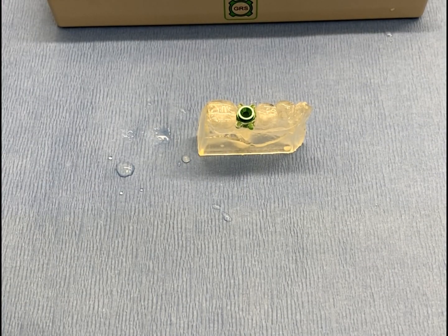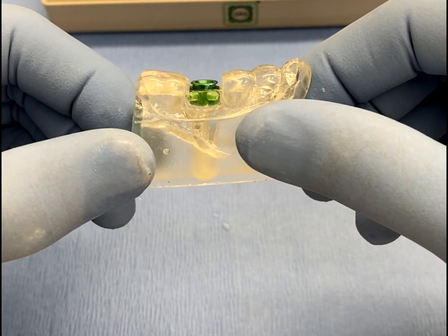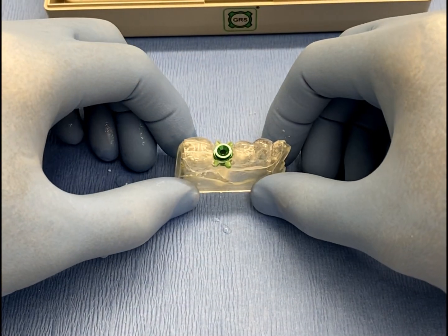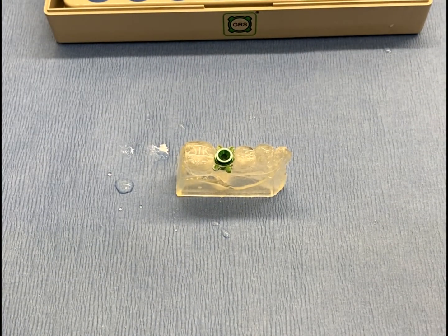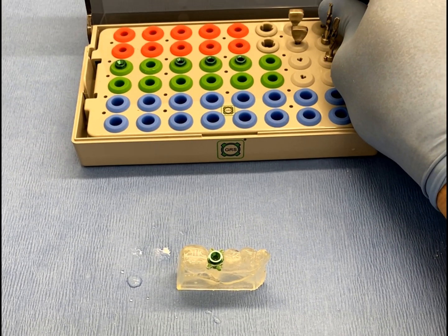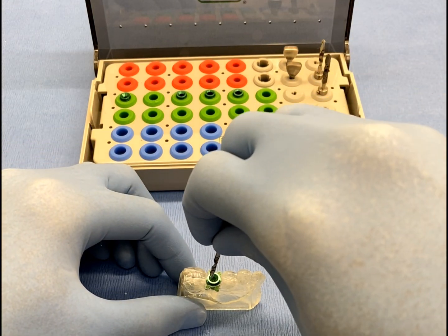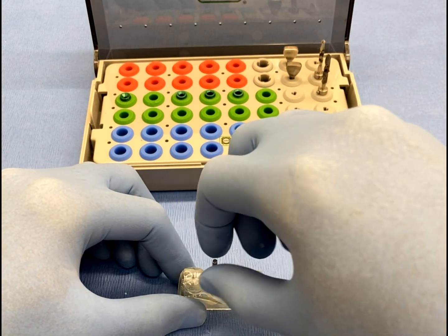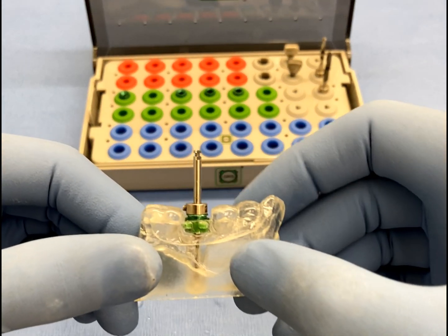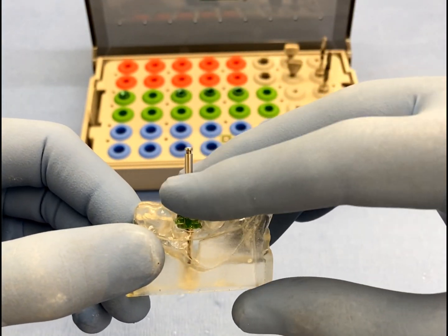Once retention and fit is confirmed, insert a GRS surgical sleeve with an internal diameter of 2.35 millimeters or less, which will usually coincide with the diameter of the initial pilot drill to be used in surgery. Once the GRS surgical sleeve has been seated completely, simply insert the initial pilot drill with a loose fitting drill stop through the GRS surgical sleeve until it reaches the bottom of the 3D printed hole in the model.